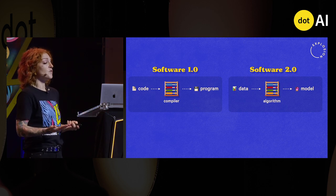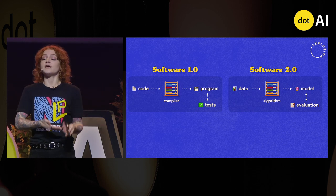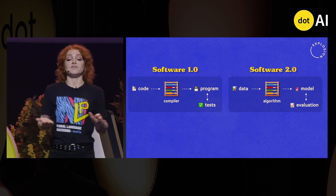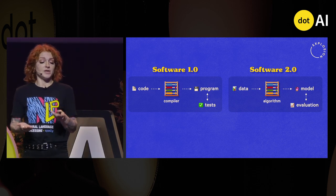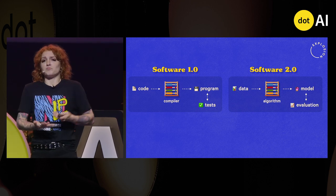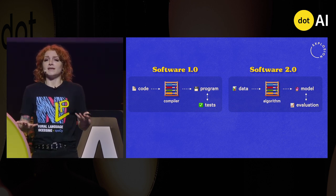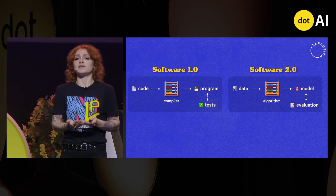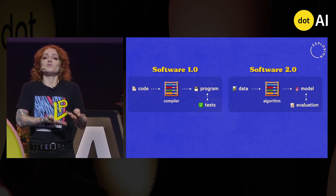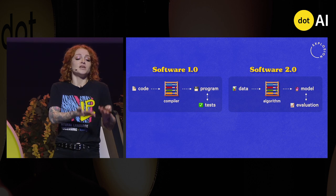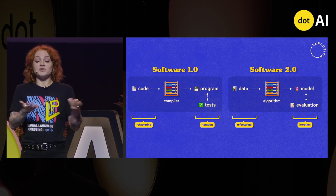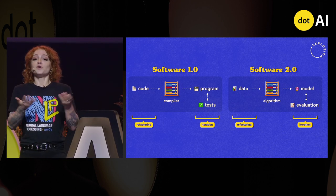And if you don't like what your program is doing, you can go and tweak the compiler — but you probably wouldn't do that. You would probably change your code and work on that. And the same is true for data.